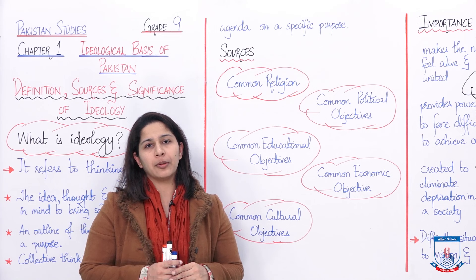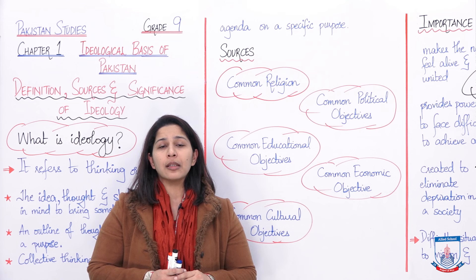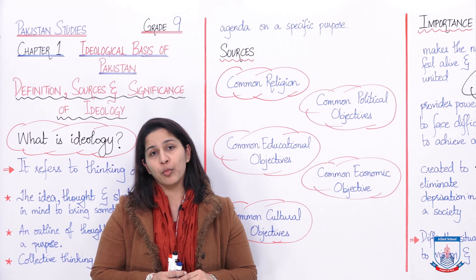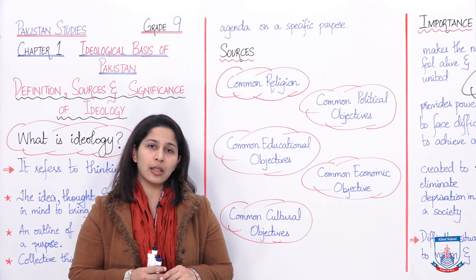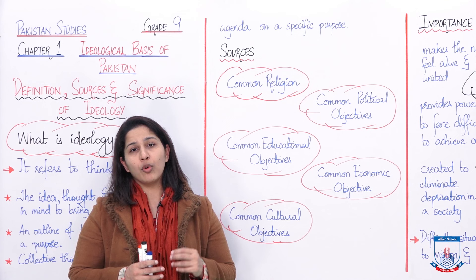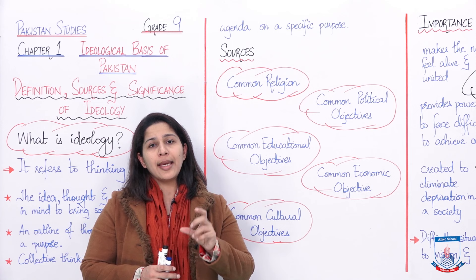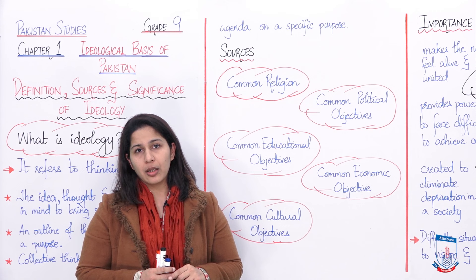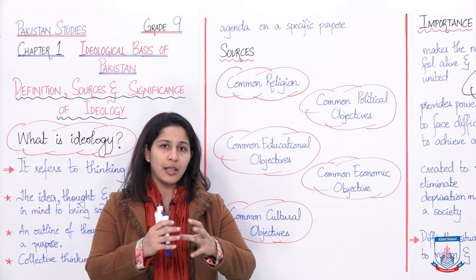First of all, common religion: in the subcontinent, Muslims and Hindus used to live together before the partition and even before the British Raj. At that time, Hindus would on and off try to promote their religion. Since Muslims were very few in number compared to Hindus in the subcontinent, they were submerged. Arya Samaj and Brahma Samaj were ideologies and movements started to promote Hinduism, and in Arya Samaj there was even a point where non-Hindus were forcibly converted to Hinduism, and Muslims were shown inferiority.